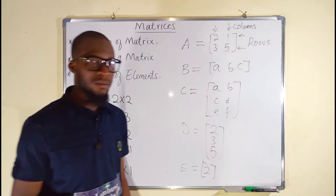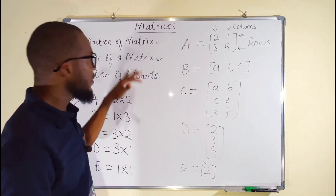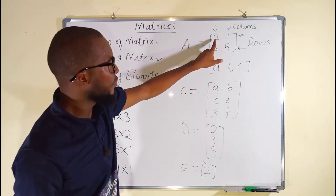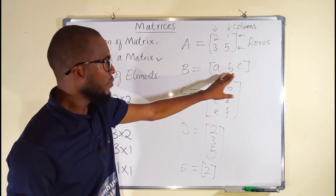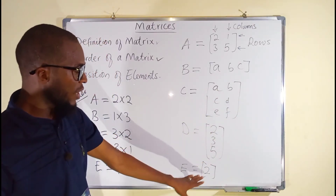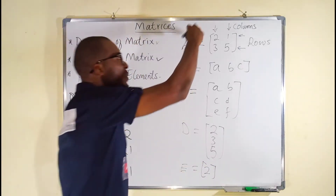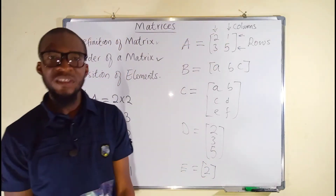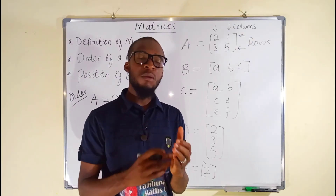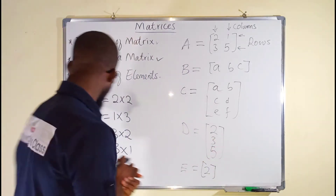Coming to the last point: position of elements in a particular matrix. These are the elements — we have 2, 1, 3, 5 in matrix A; A, B, C in matrix B; A, B, C, D, E, F in matrix C; 2, 3, 5 in matrix D; and 2 in matrix E. Each element in a particular matrix is said to be unique, meaning it has a way of identifying that particular element alone.